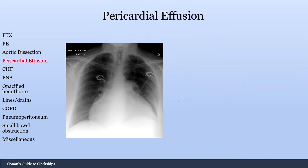Now let's move on to pericardial effusion. The main finding is what's called a water bottle heart — fluid surrounding the heart inside the pericardial sac. If it happens slowly over time, patients can adapt and can have a pretty large pericardial effusion with relatively minor symptoms. But if it happens quickly, you're concerned for cardiac tamponade, which the body does not compensate for quickly and can be very dangerous and life-threatening.